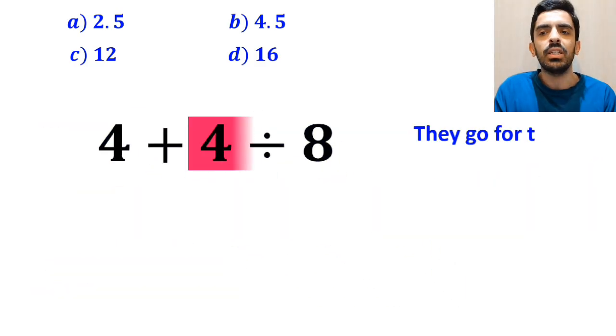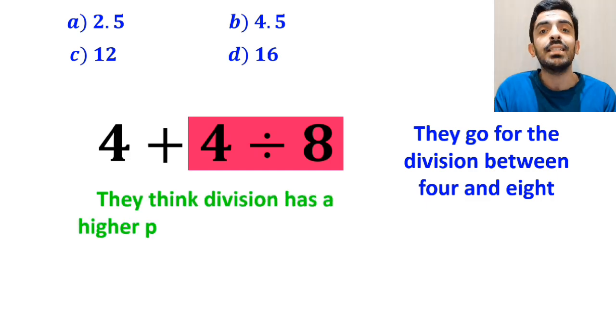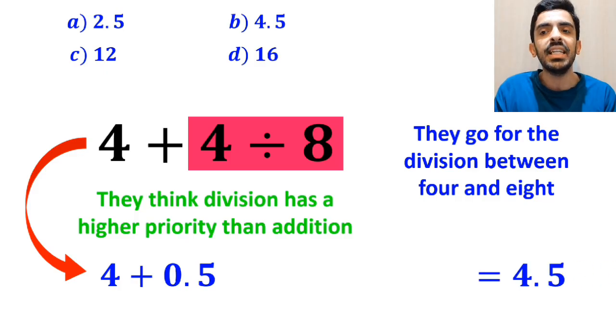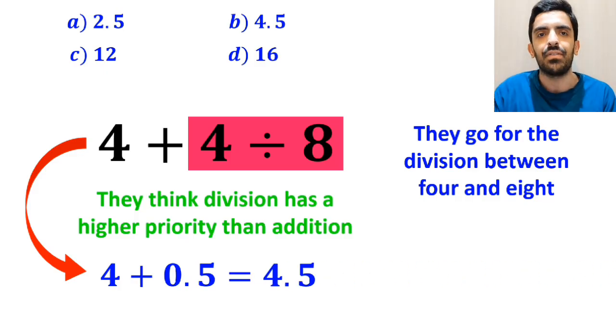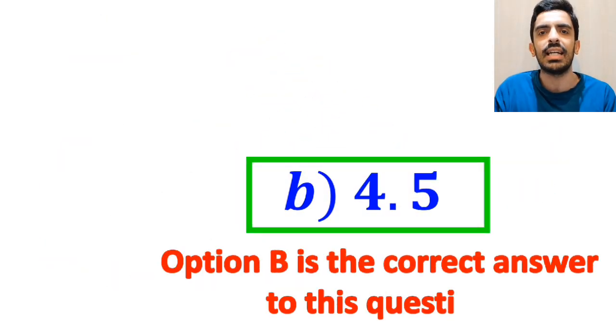Then, they go for the division between 4 and 8, because they think division has a higher priority than addition. They write this expression as 4 + 0.5, which ultimately gives them the answer 4.5. And immediately, they conclude that option B is the correct answer to this question.